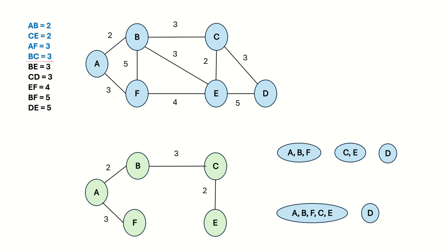Next we look at edge BC. The representative set for B is the set containing A, B, and F, and the representative set for C is the set containing C and E. They are disjoint, so we add edge BC to the MST and take a union of these two sets, forming one new merged set.